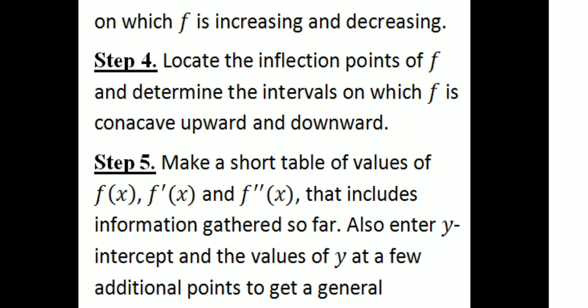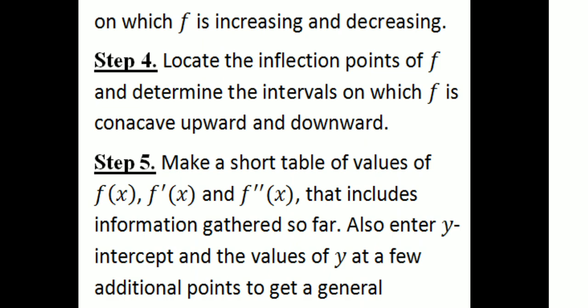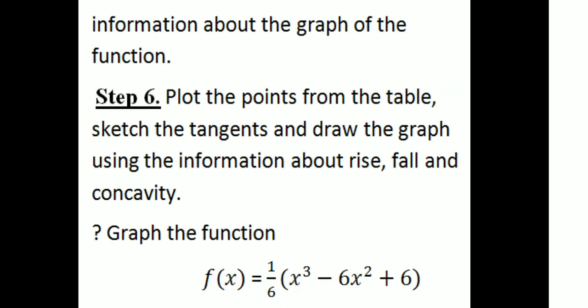Step 5: make a short table of values of f(x), f'(x), and f''(x) that includes the information gathered so far. Also include the y-intercept and the values of y at a few additional points to get general information about the graph. Step 6: plot the points from the table, sketch the tangents, and draw the graph using the information about rise, fall, and concavity — increasing or decreasing.